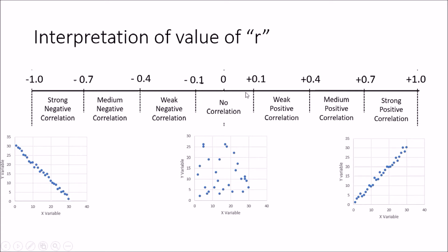Looking at the middle part of the diagram, from minus 0.1 to plus 0.1, that is the no correlation region. If the r value falls in this range, those two variables are not related — you can see just a scatter plot with no visible relationship between x and y. In the far positive corner, from plus 0.7 to plus 1.0, that is strong positive correlation — when x is increasing, y is also increasing.